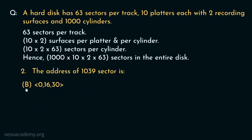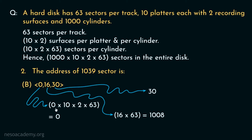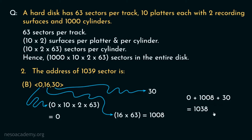For option B (0,16,30): cylinder 0 gives 0 sectors. To reach surface 16, we cross surfaces 0 to 15 — that is 16 surfaces — each with 63 sectors, giving 1,008 sectors. To reach sector 30, we cross 0 to 29, that is 30 sectors. Total: 0 plus 1,008 plus 30 equals 1,038. This address corresponds to sector 1,038, which is also not our target of 1,039.